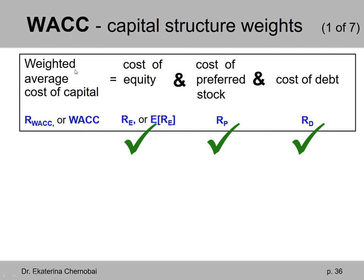Let's go back to the formula that we are trying to build throughout this chapter. We're trying to build the formula called the weighted average cost of capital, or WACC. Students often call it WACC. It has to reflect some sort of average of the cost of equity RE, cost of preferred stock RP, and cost of debt RD. We have just reviewed the calculation of each of these three costs, and now we need to connect them.